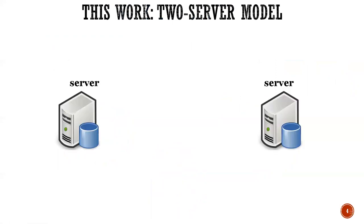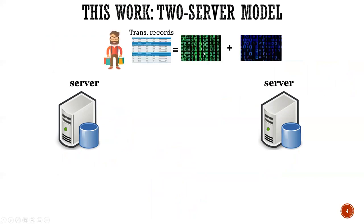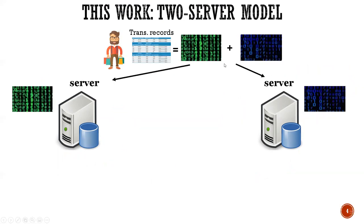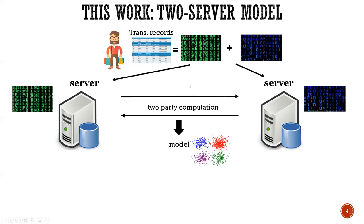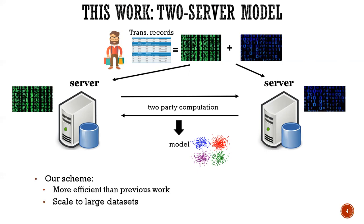In this work, we consider a two-server model, which is a very popular setting in secure machine learning. The data is secret shared between two servers, so if the two servers do not collude, they learn nothing about the original dataset. The servers run two-party computations on the shared values and output the models. Compared to previous work, our scheme is more efficient and scales to big datasets.